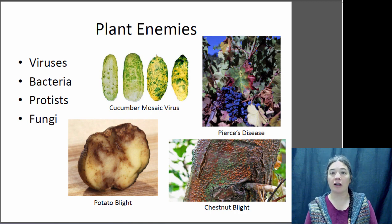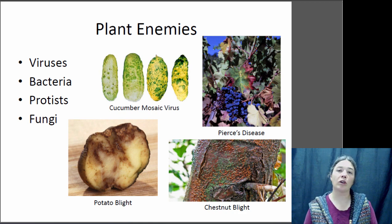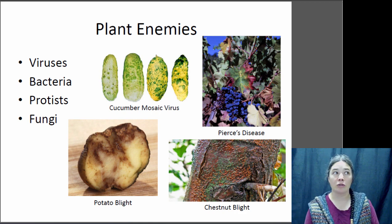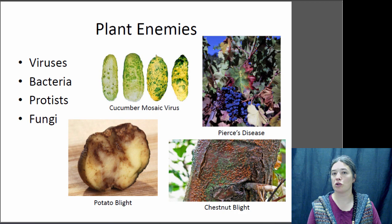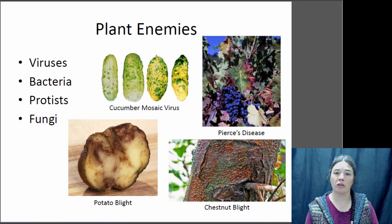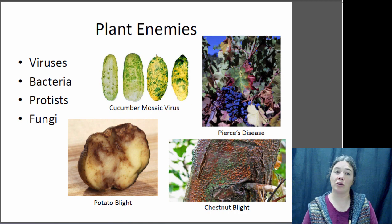A fungus that causes disease is chestnut blight. On the east coast of the U.S., the most common tree was once the American chestnut, but chestnut blight was introduced from Europe and Asia. The trees in America didn't have any resistance to this disease, and the fungus killed virtually all of the mature chestnuts on the eastern coast. Now there are only young chestnuts, and the disease usually kills them before they get very large, so there are still no mature chestnuts on the east coast.